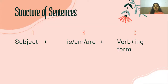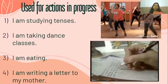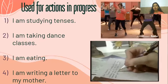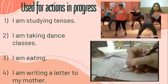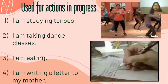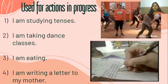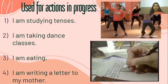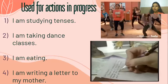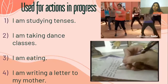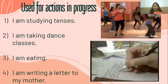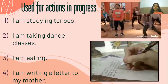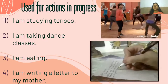Let's see in which cases we use the present continuous tense. First, it is used for actions that are in progress, either at the present moment of time or in general. For example: I am studying tenses; I am eating; I am writing a letter to my mother — all these actions are in progress at the present moment. Also, I am taking dance classes — this action may not be in progress at the current moment, but you are doing it regularly in general, so we also use the present continuous tense for these.